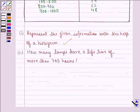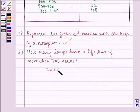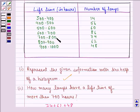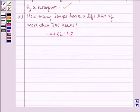Now let us answer the second part that is how many lamps have a lifetime of more than 700 hours. So that would be 74 plus 62 plus 48 because it is given to us in the question that 700 to 800 is 74, 800 to 900 is 62 and 900 to 1000 is 48. So we add 3 of them that will be equal to 184 and this becomes our answer to the second part.